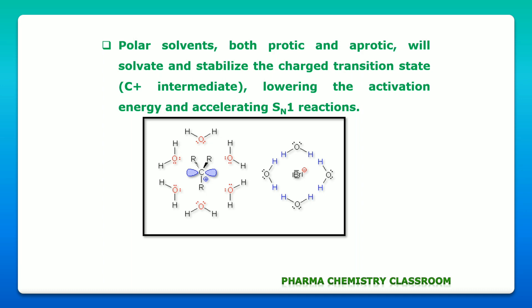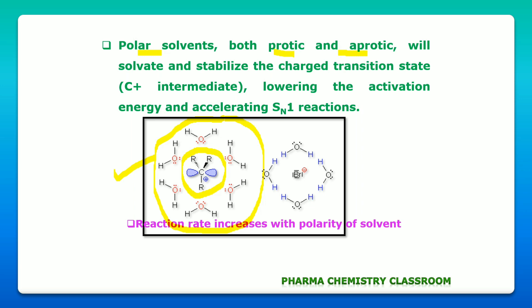Polar protic and polar aprotic solvents will solvate the carbocation and stabilize it, thereby accelerating the rate of SN1 reaction. Stabilization of the carbocation occurs in polar solvents — both protic and aprotic — because they stabilize the carbocation by solvating it. Here you can see a carbocation solvated by a polar protic solvent, water. Its stability increases, energy of activation decreases, and the rate of SN1 reaction increases. Reaction rate increases with polarity of the solvent.